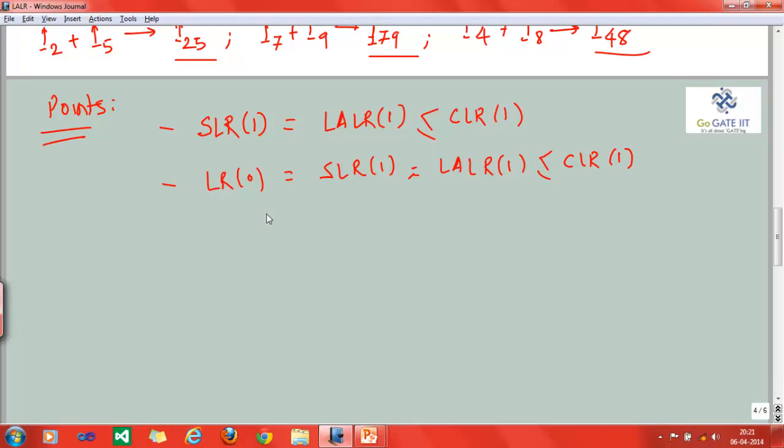So what we discussed in the CLR 1 parser—we have SR conflict and RR conflict. The point to be noted in LALR case is: even though there is no RR conflict in CLR parser, there is a possibility that we will get RR conflict in case of LALR parser.